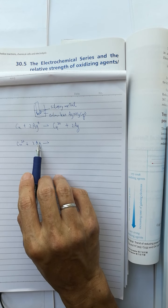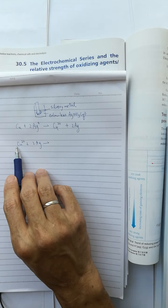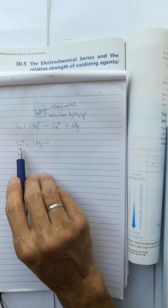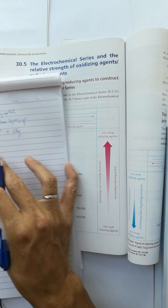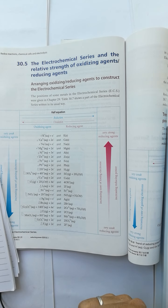So the silver cannot lose electrons to be accepted by the copper two plus.